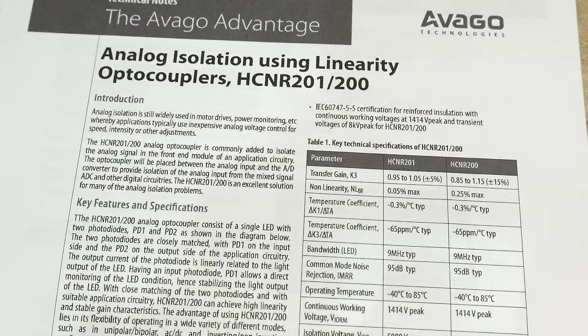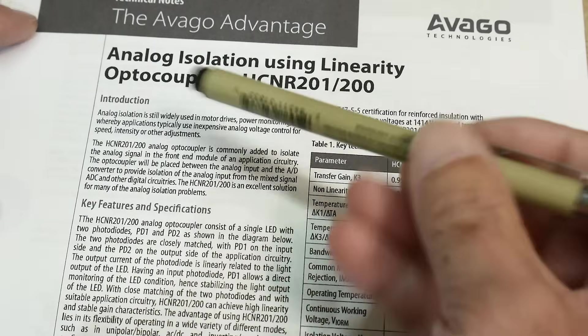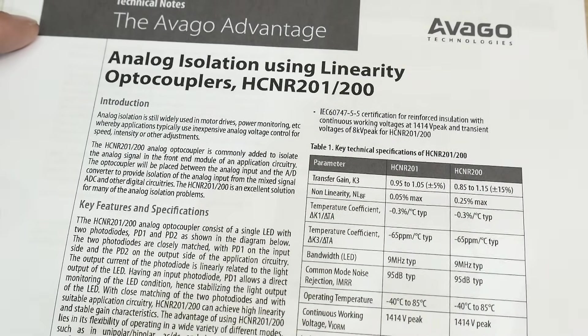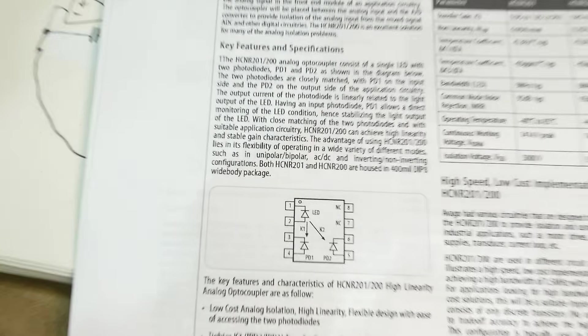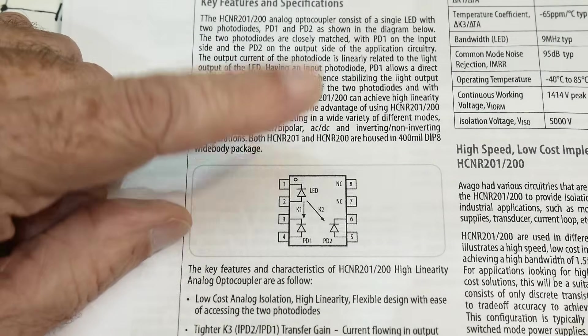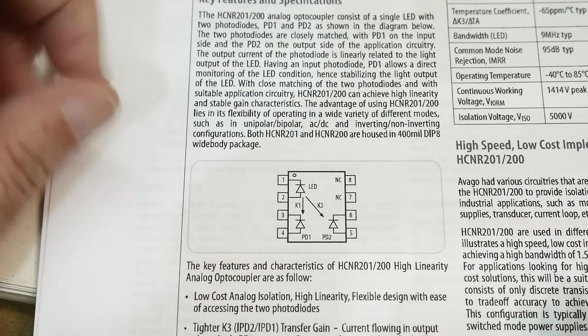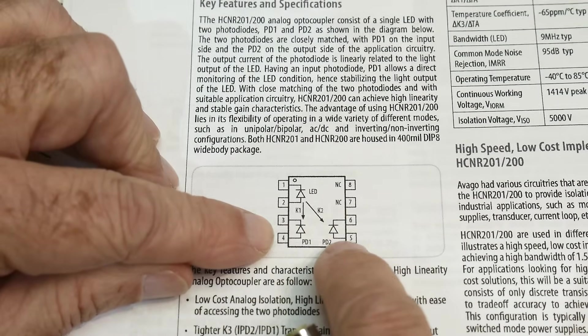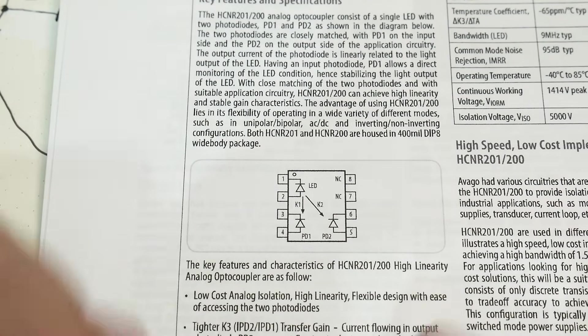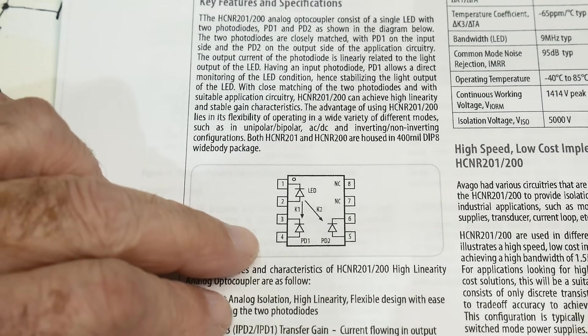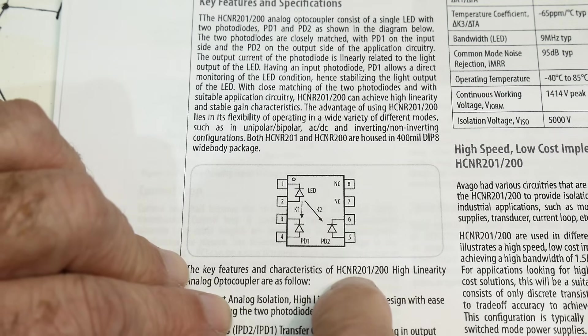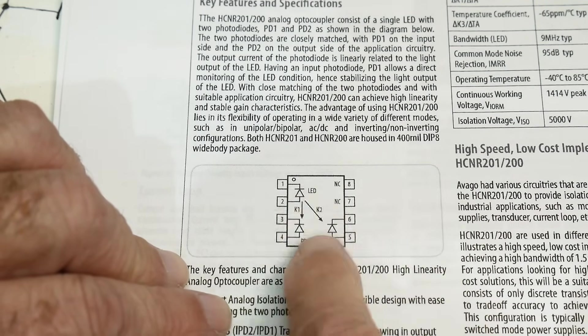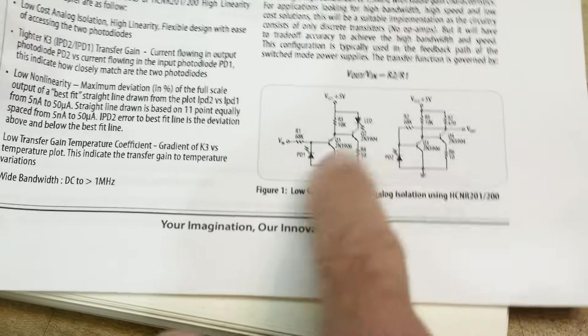Here's an old data sheet or application note from the old HP days and from now it was Avago. This problem has existed for a long time and people have wanted to solve it. So they built this part, which is one LED and two photodiodes. They're not phototransistors, they're photodiodes. That allows you a little more flexibility in the circuit that you build and you can speed it up and things like that. This is an HCNR 200, 2001, 2000 or 201 to 200.